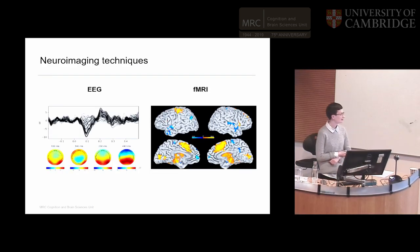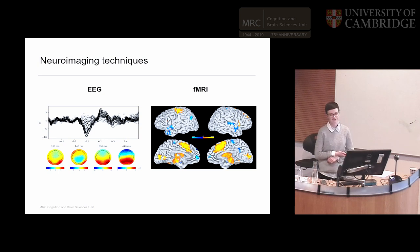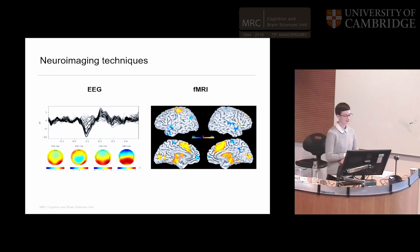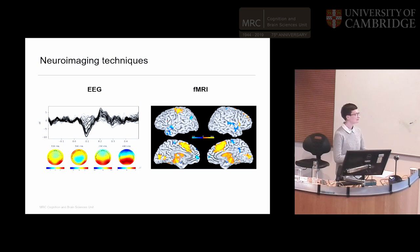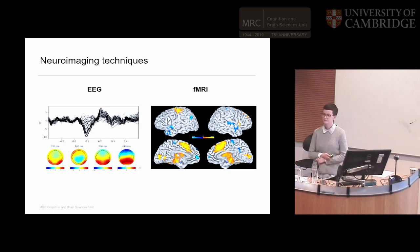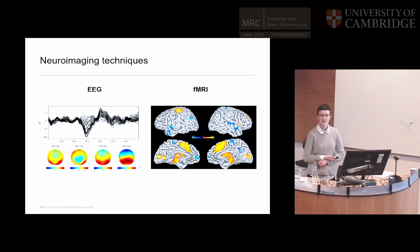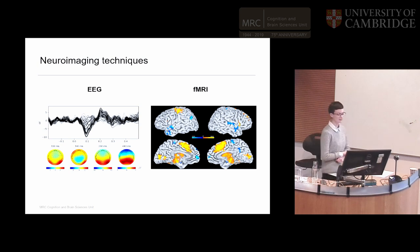EEG and fMRI are different views onto our neural activity. We've got good temporal resolution with EEG, but relatively poor spatial resolution — we're measuring the electrical potentials on the surface of the skull. Whereas with fMRI, we've got relatively good spatial resolution but relatively poor temporal resolution. So you can see why we might want to think about combining these two modalities, because they have opposite deficits.